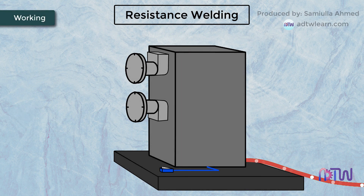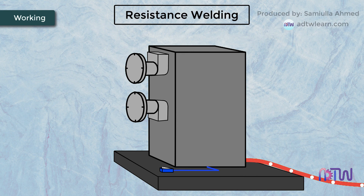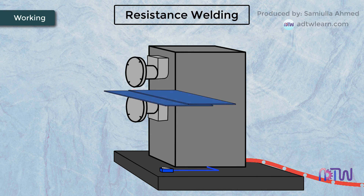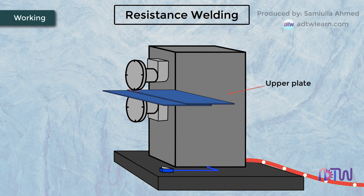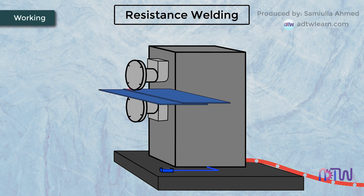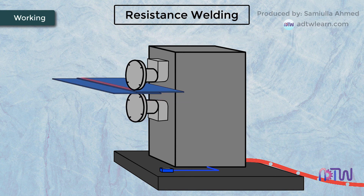Working of seam welding: When the power is turned on, the transformer supplies low voltage, high current to the roller electrodes made up of conductive materials. These roller electrodes support the pair of workpieces to be welded together. When the rollers make contact with the workpiece, the current flows easily through the roller electrodes with low resistance but experiences high resistance at the metal-to-metal interface — that is, between the upper plate and lower plate to be joined. This high resistance raises the temperature to the fusion point between the workpiece interfaces, and a weld is generated in the form of a nugget.